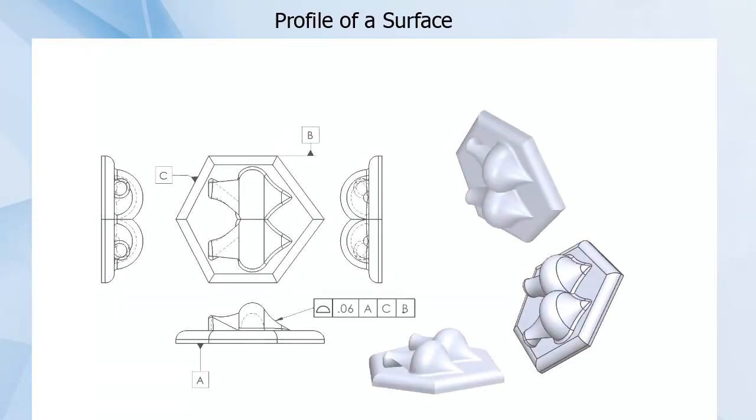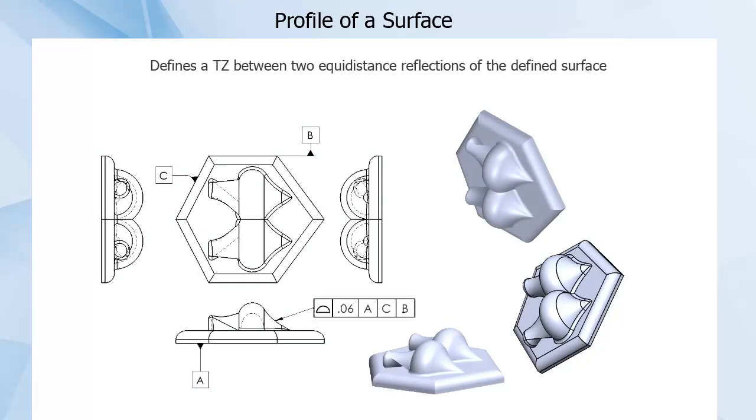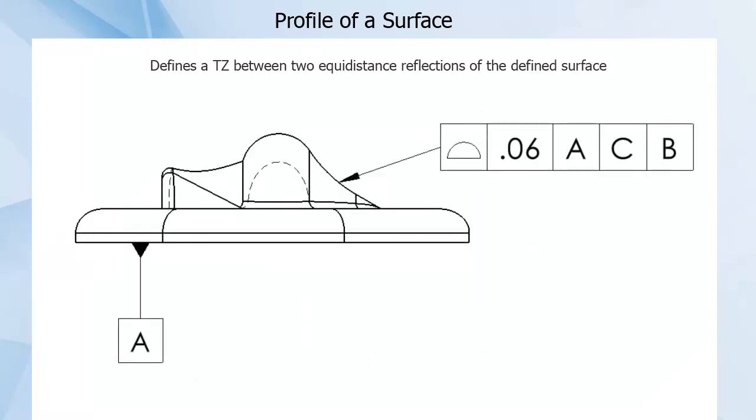Profile of a surface defines a tolerance zone between two equidistant reflections of the defined surface. Essentially, if your profile of a surface TZ was 0.06 mm, you could take your CAD model and then create a version of it 0.03 mm smaller and 0.03 mm larger, and those would be the boundaries of your tolerance zone. Every point of your part would then need to fit within that tolerance zone.